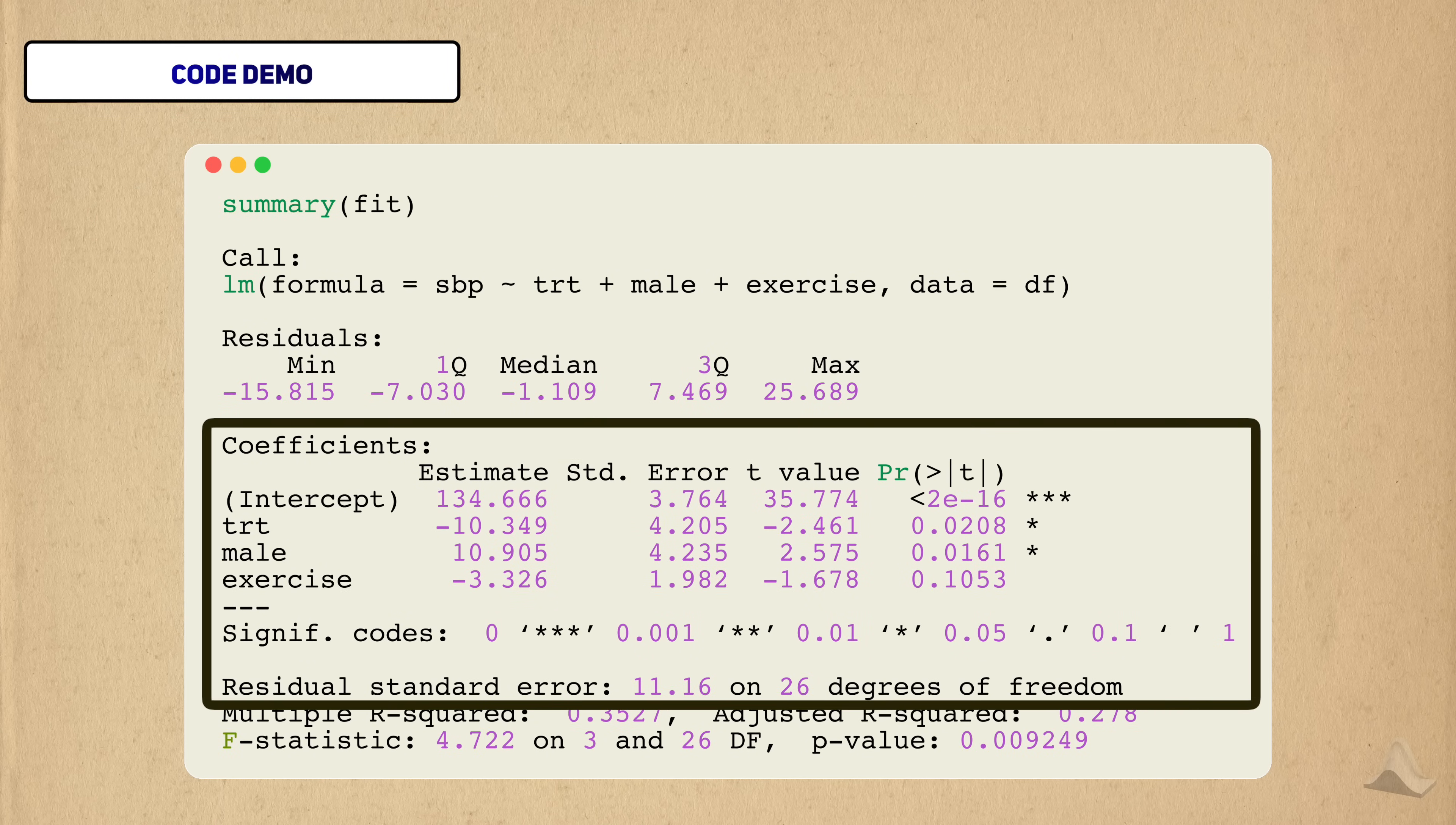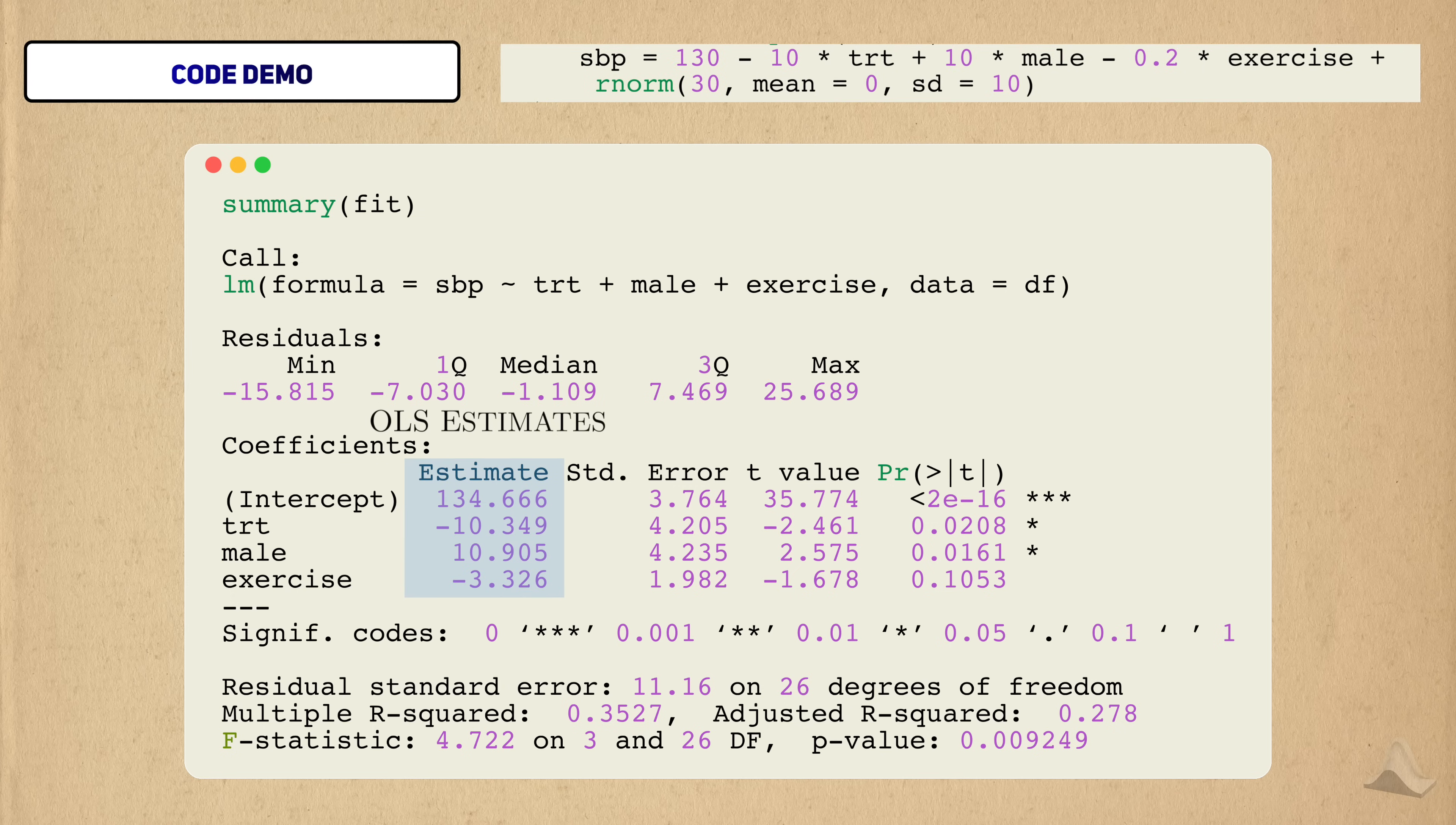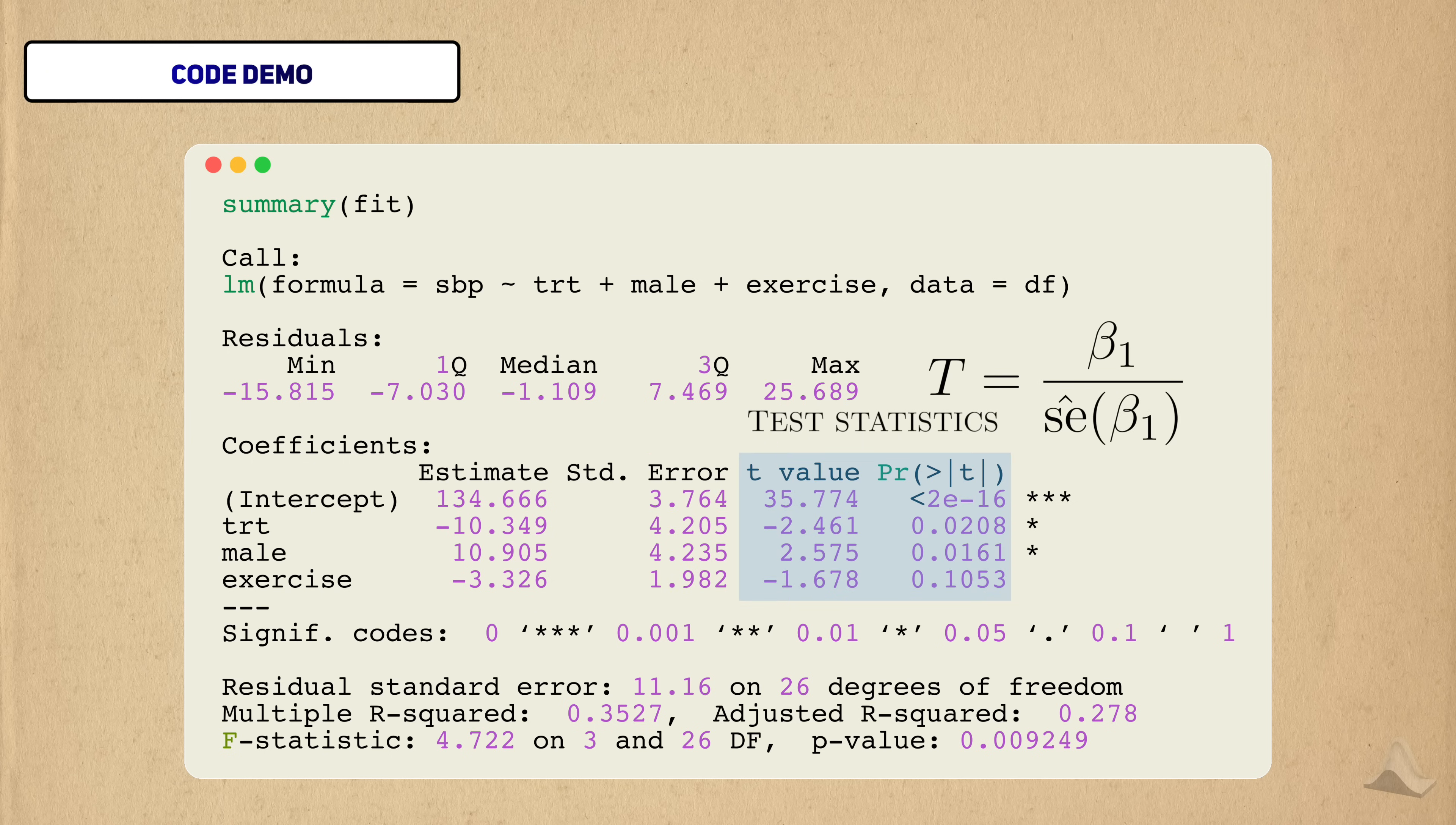We'll just focus on this section here since I haven't taught you everything needed to interpret all of these results. This first column indicates the specific covariate, and this column has the OLS estimates for each of them. You can see that they're somewhat close to the true values I used, but I only used 30 observations, so you shouldn't expect them to be that close. Here are the standard deviations, or standard errors, for each of these coefficients, and these come from the covariance matrix I mentioned earlier. After these are the test statistics and the corresponding p-values for them. To see where the degrees of freedom come, you can see right here. We have four parameters to estimate and 30 observations, so we have 26 degrees of freedom total.